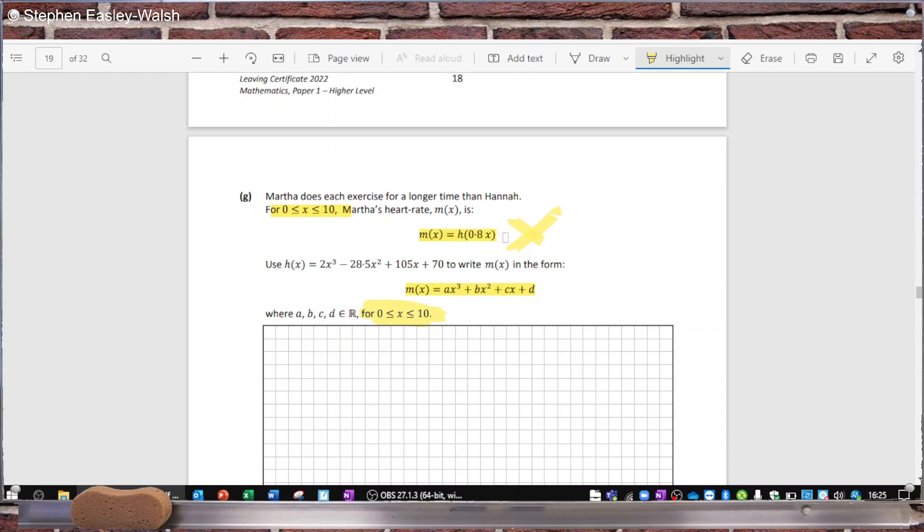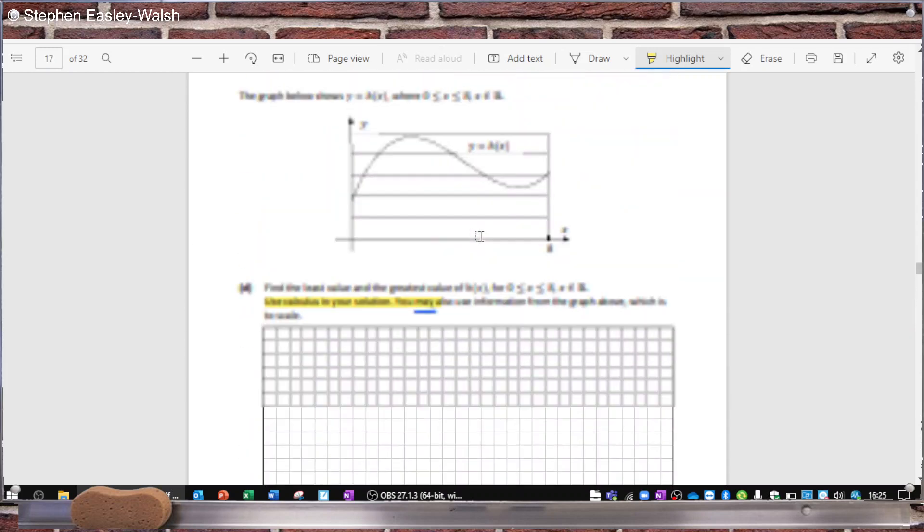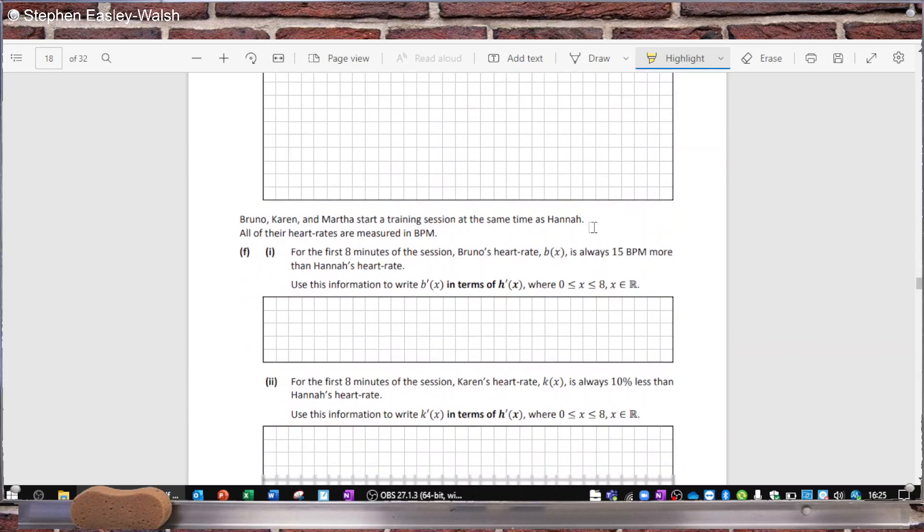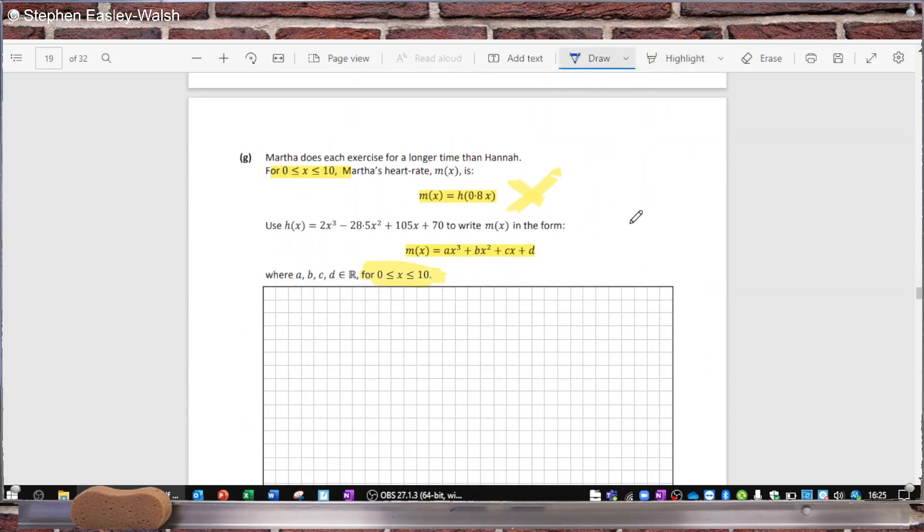This H(x) is only valid up to 8, it's not valid after 8. I'll just go back to the start of the question. For the first eight minutes of the session Hannah does a number of exercises - there's no doubt about it, this H(x) is for 0 to 8 minutes. So it means that this equation here later is not valid outside of that range. The x can only be from 0 to 8, and so you can't actually find the mx here. It's not possible to find an mx where x is between 0 and 10.